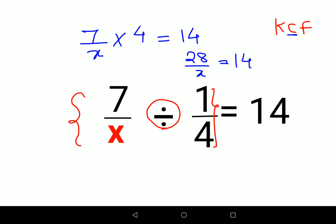Now what you do is multiply both sides by x. So you get 28 equals 14x. The x's are canceling here.